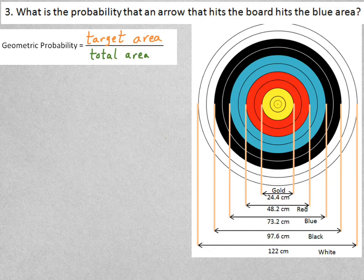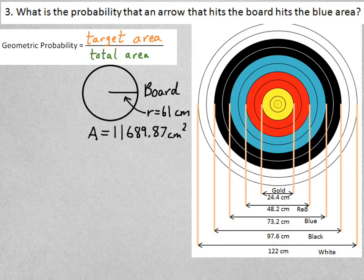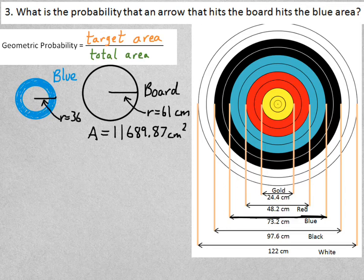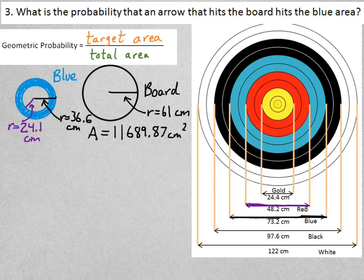Let's see how you did. The board, again, is still the same. It has the same area as before. Now we're looking for the target area that's the blue ring. I'll need the two radii for the outer and inner circle. The radius of the outside circle is 36.6 because it's half of the diameter, 73.2. The inside circle has a radius that is half of 48.2, which is 24.1.